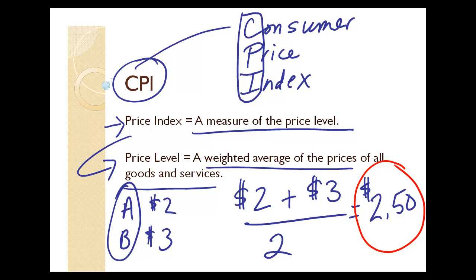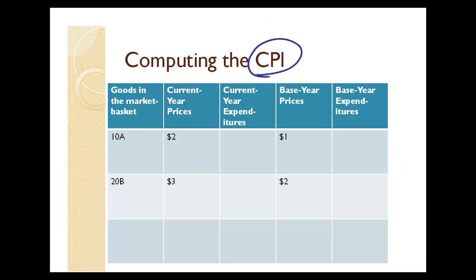One of the most common price indices is the Consumer Price Index, and we're going to compute it step by step. The first step is that a market basket is defined. A market basket is simply the goods and services that a typical household buys — things like clothes, food, shoes, books, and computers. In our example, the market basket has two goods, A and B, and we'll say the typical household buys 10 units of A and 20 units of B.